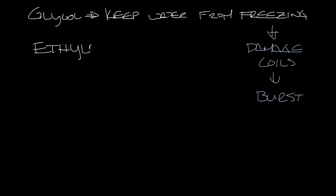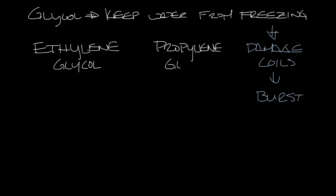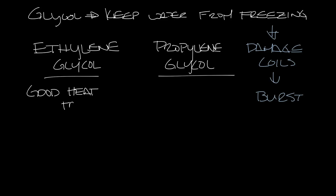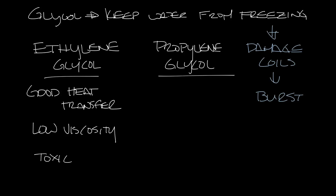There are two types of glycol: ethylene glycol and propylene glycol. Ethylene glycol is the most common antifreeze in HVAC applications because it has good heat transfer efficiency. It also has low viscosity, which means that less pump power is needed. But it is toxic, so it isn't used where it could possibly leak into food processing systems or anywhere that people or animals may possibly ingest it.